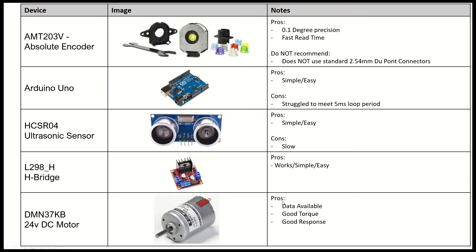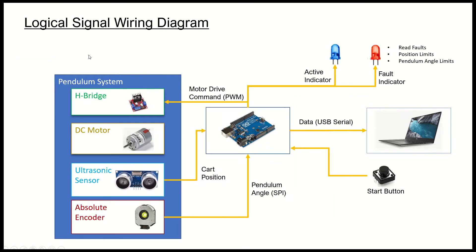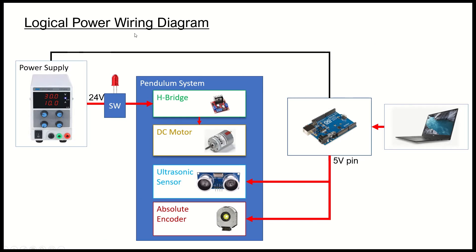Having the datasheet allowed me to calculate the torque constants and use them in my models. It's got good torque and a good response as well, which is why I chose it. Next I'm going to talk about how I've wired all of this up. This section is intended for people who are newer to Arduino and embedded design. This is a logical power wiring diagram, which just tells you the power connections, and in the next slide I have the logical signal wiring diagram showing all the data flows.